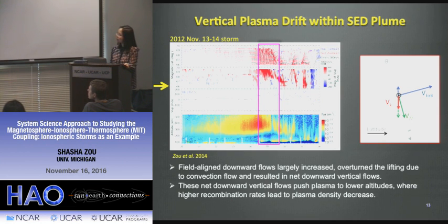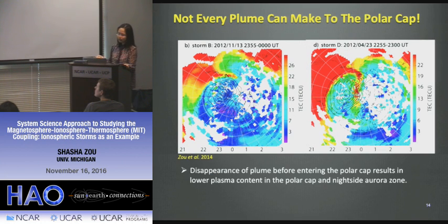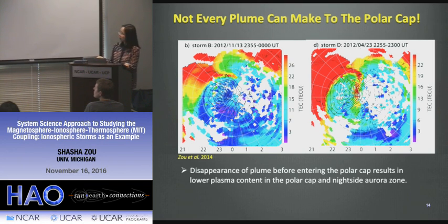After the penetration electric field, the convection flows continue to increase but the field-aligned component became strongly negative, overturning the ExB-driven uplifting — the total flow is now downward — and we see the density decrease in the ionosphere. These net downward flows push plasma to lower altitude where it meets denser neutrals and recombines much faster. Such long-lasting downward flows can very effectively deplete the SED plume, meaning some plumes never get a chance to enter the polar cap. We are actively pursuing understanding the consequences for O+ content in the magnetosphere.